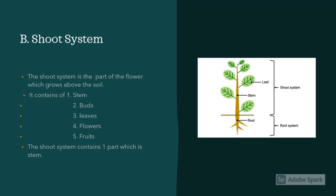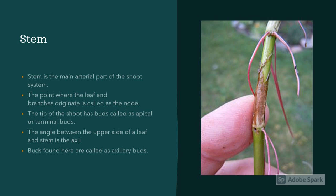Now let's talk about the shoot system. The shoot system is the part of the plant which grows above the soil. It contains flowers, fruits, stems, leaves, buds, branches, and etc. Now as we have understood the shoot system, let's understand the main part of the shoot system: the stem. The stem is the main arterial part of the shoot system. It helps in carrying water and nutrients for the plant for its growth.